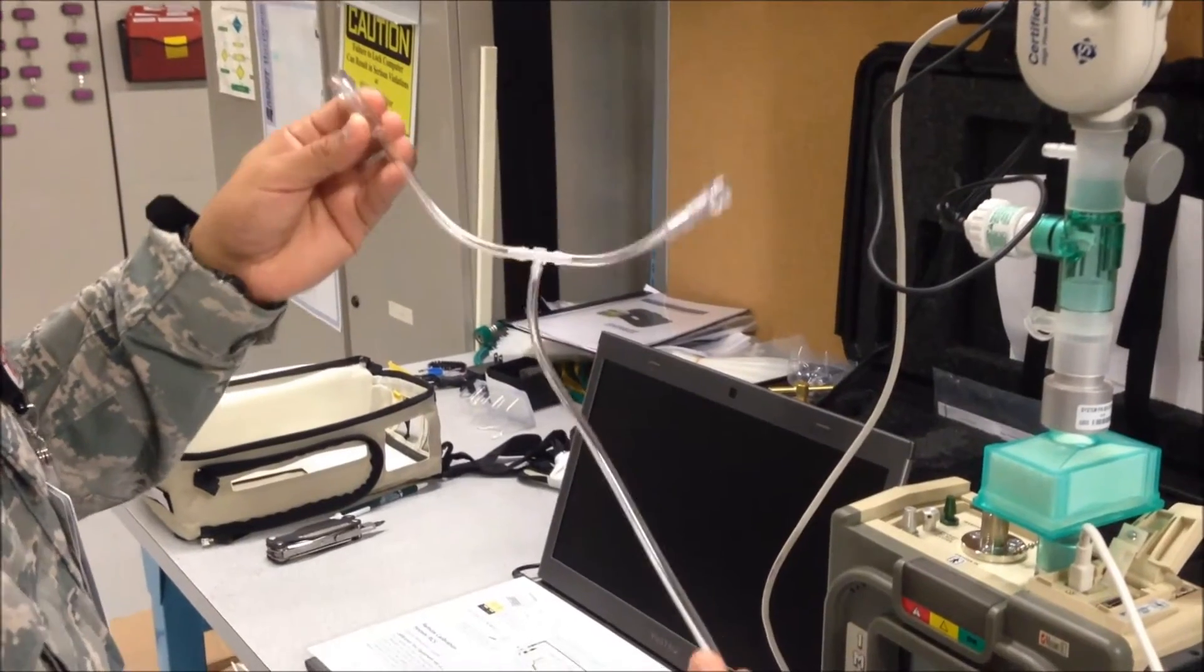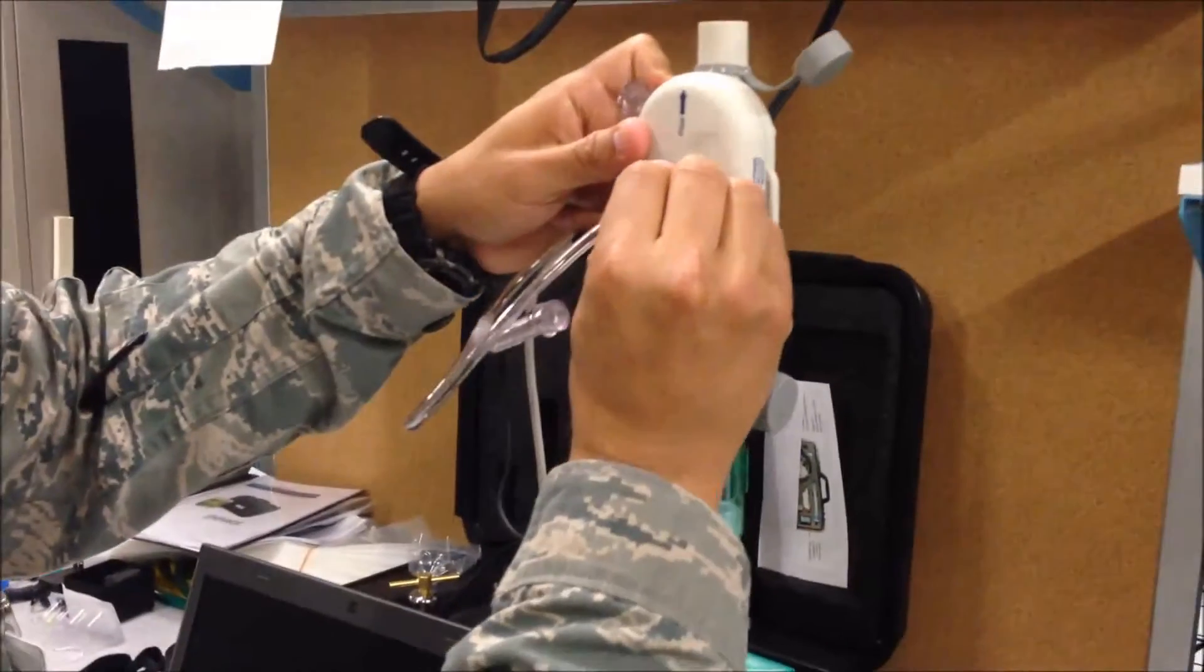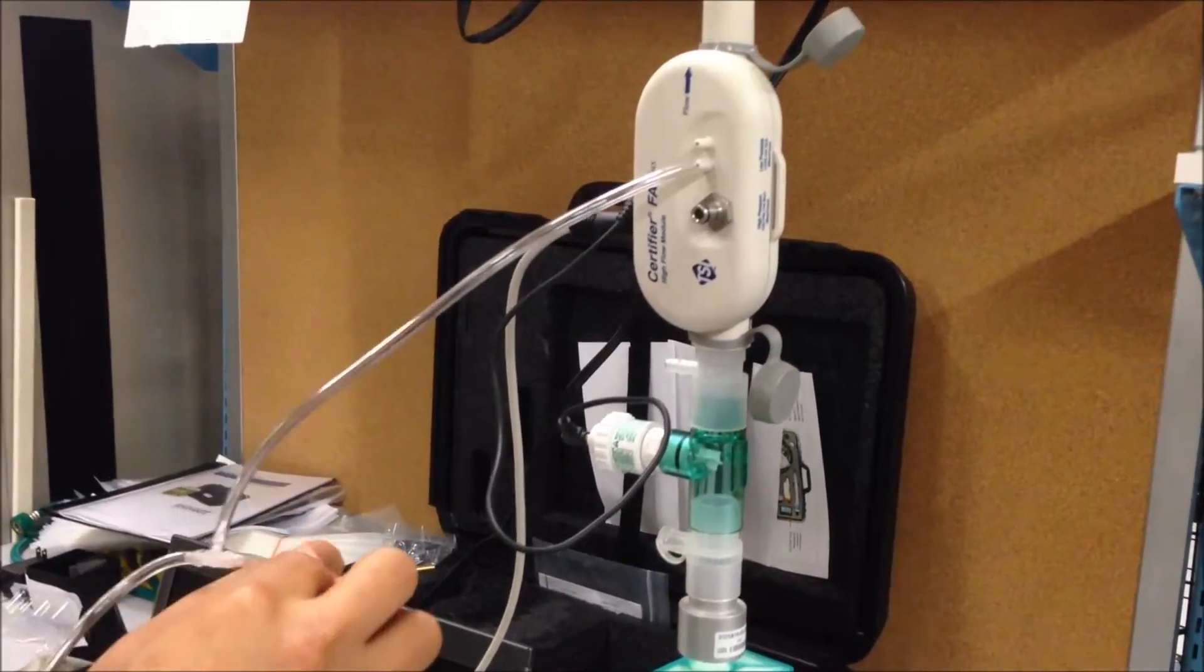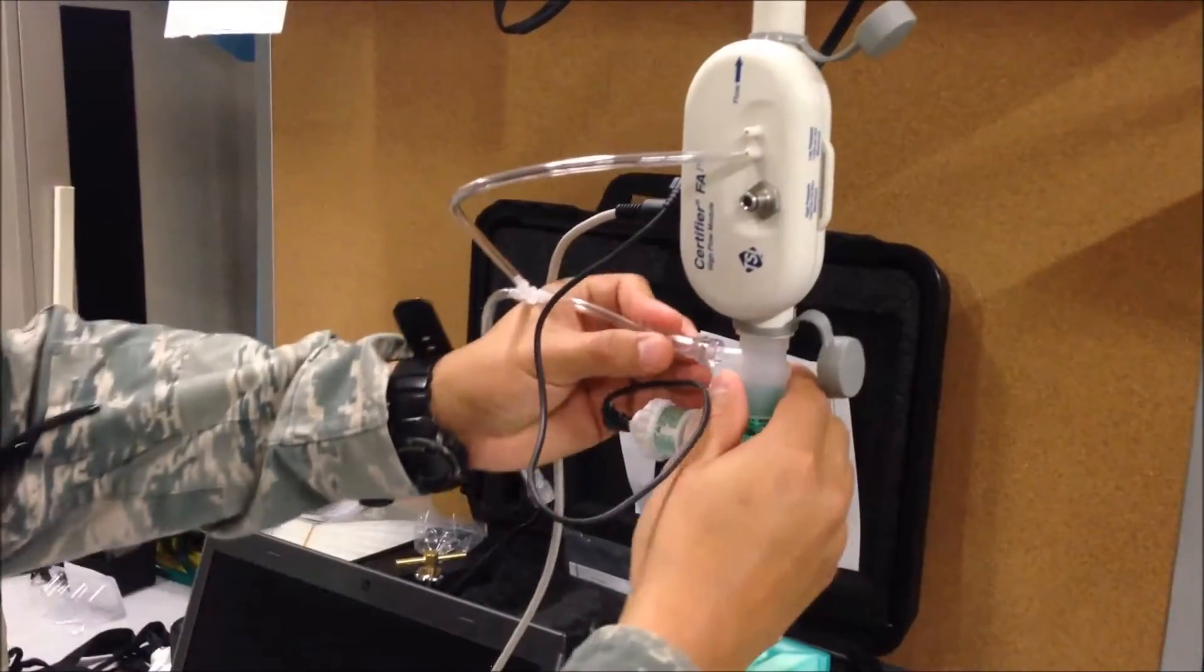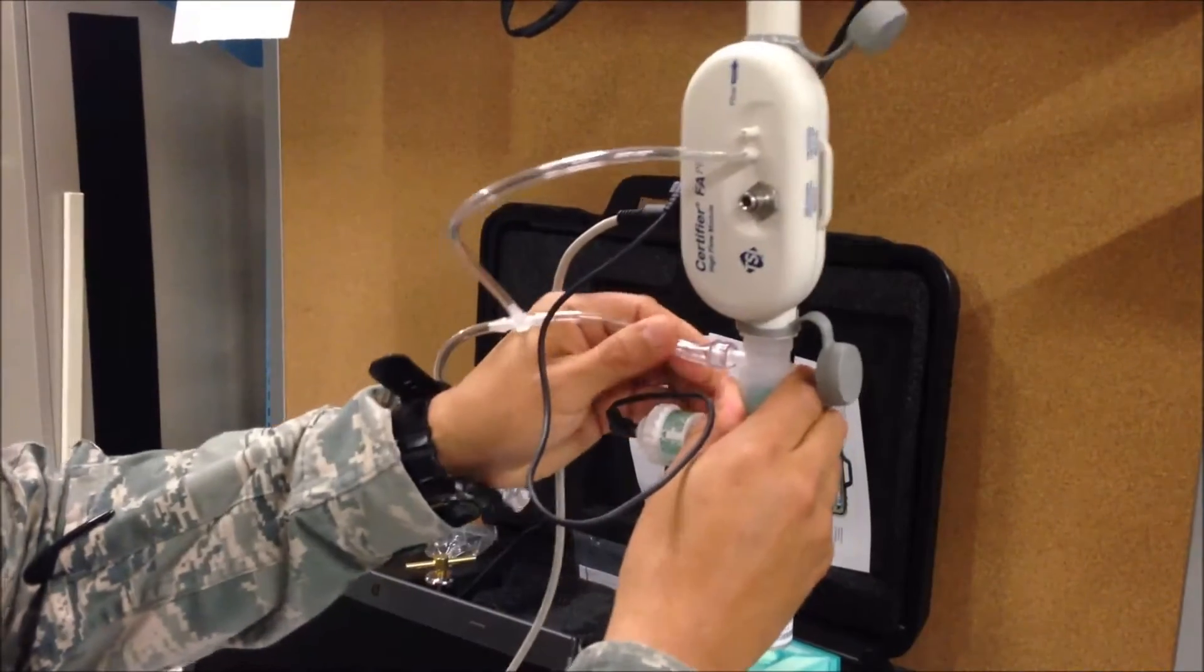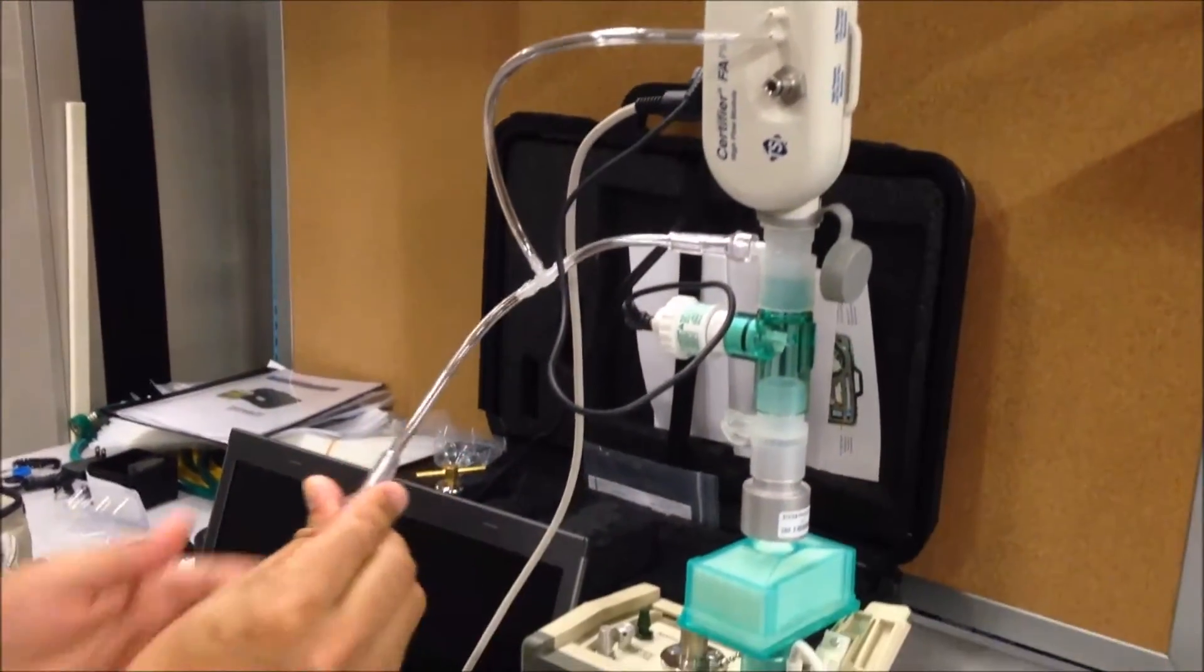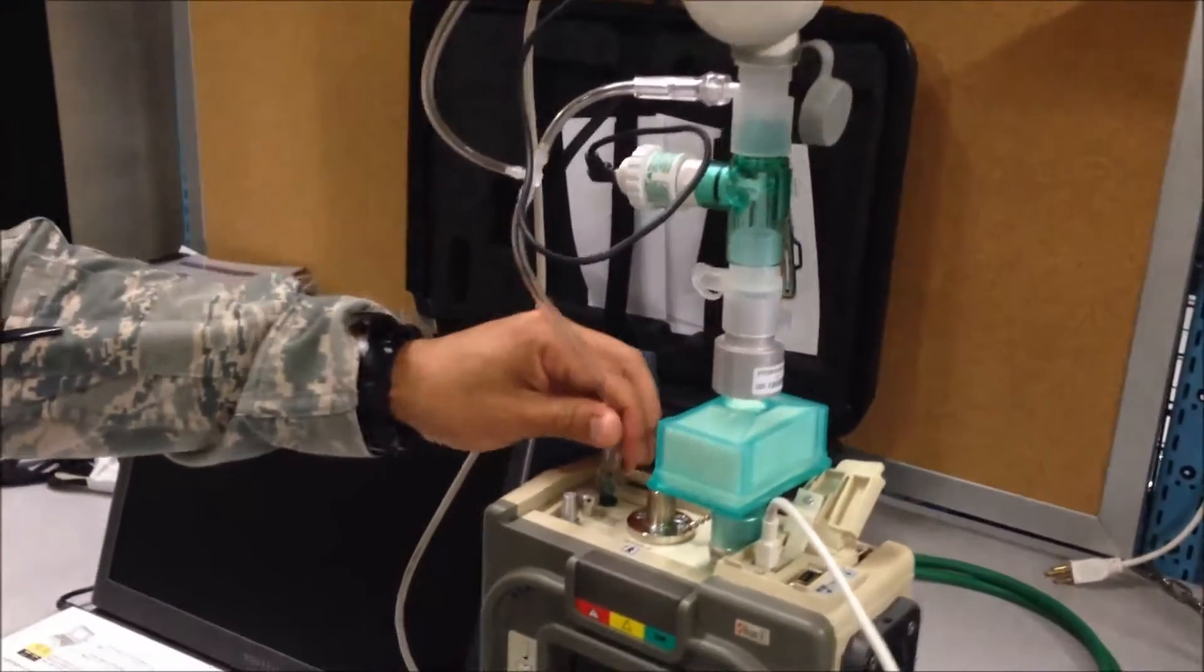Once this is created, connect it to the positive end of the high flow module. The other connection goes to the airway pressure Y-tubing and your final connection to the airway pressure transducer on the 731 unit.